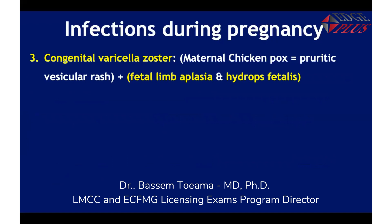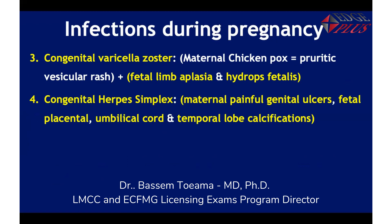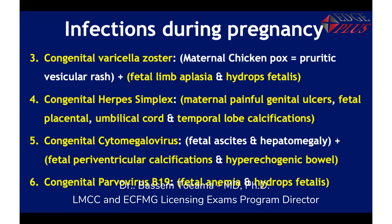Varicella zoster presents with maternal chickenpox — a pruritic vesicular rash — and fetal limb aplasia and hydrops fetalis. Congenital herpes simplex presents with maternal painful genital ulcers and fetal placental, umbilical cord, and temporal lobe calcifications. Congenital cytomegalovirus presents with fetal ascites, hepatomegaly, periventricular calcifications, and hyperechogenic bowel seen on ultrasound. Congenital parvovirus B19 presents with fetal anemia and hydrops fetalis.